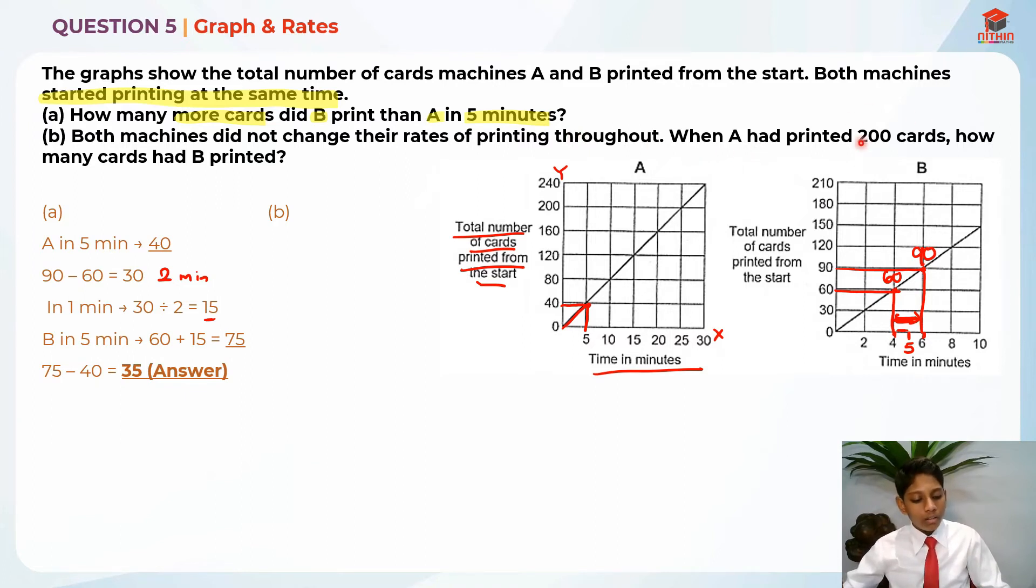And when A had printed 200 cards, how many cards did B print? So, first of all, I'm going to find 200 divided by 40. So, it actually took 5 sets of 5 minutes for A to make 200 cards. So, 5 sets of 5 minutes is basically 5 times 5 which will give us 25 minutes. And this 25 minutes over here is actually the amount of time both of the printers printed. So, if A printed for 25 minutes, B also printed for 25 minutes because both of them started at the same time. And since we know that B printed 35 more cards in every 5 minutes, we know that there are 5 sets of 5 minutes for A printing 200. We can find the difference of B printing more than A in that 25 minutes.